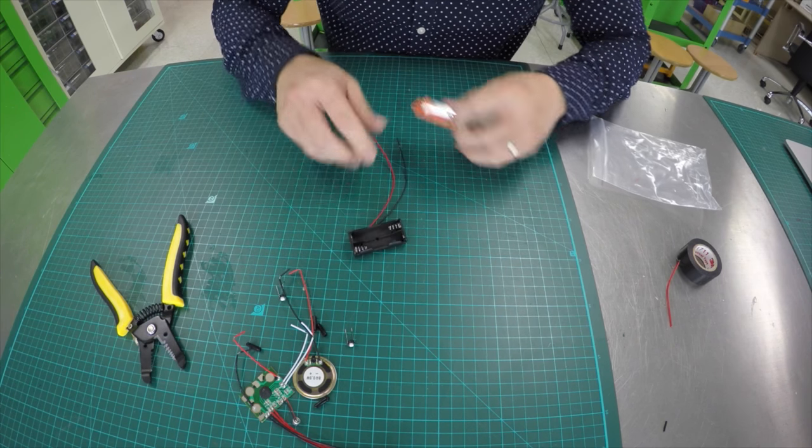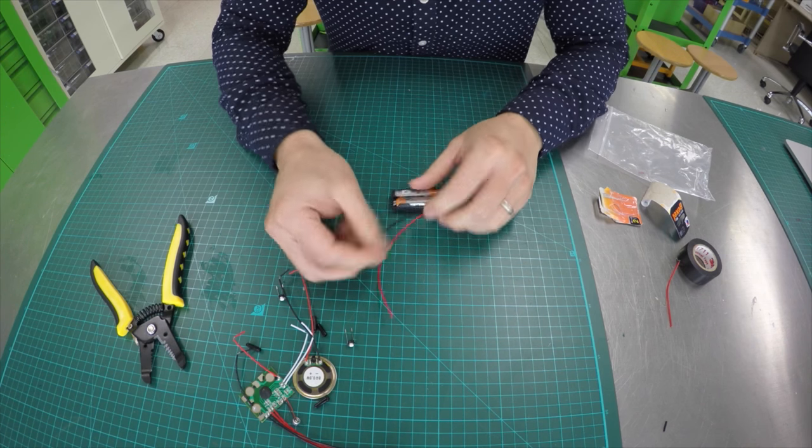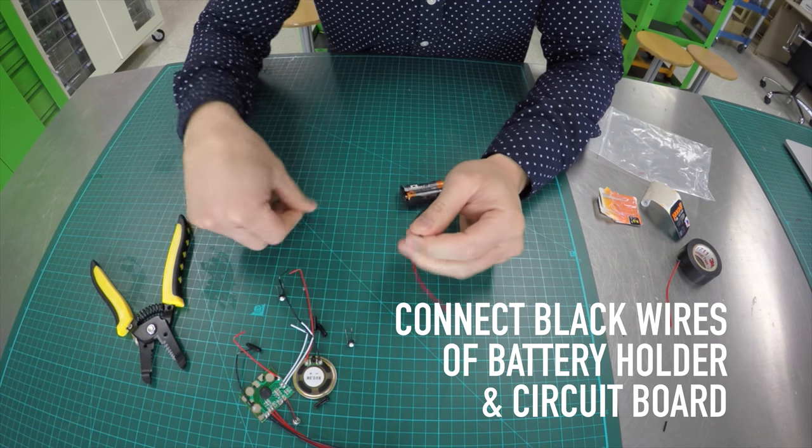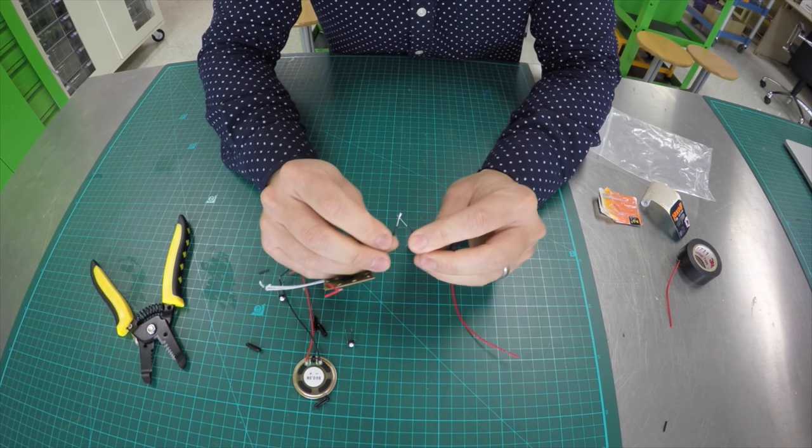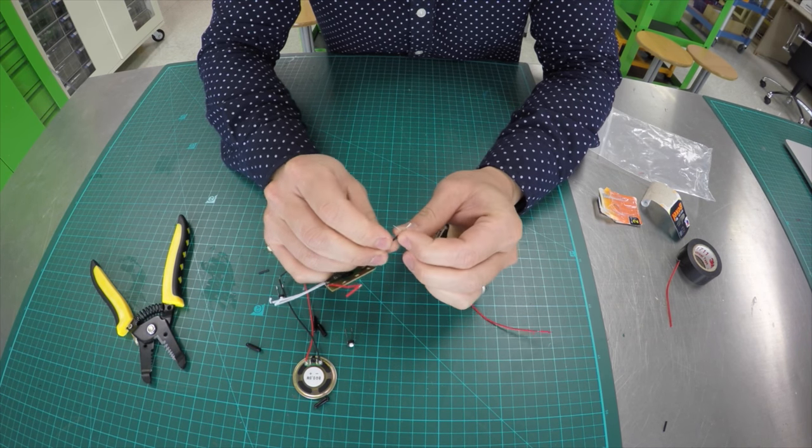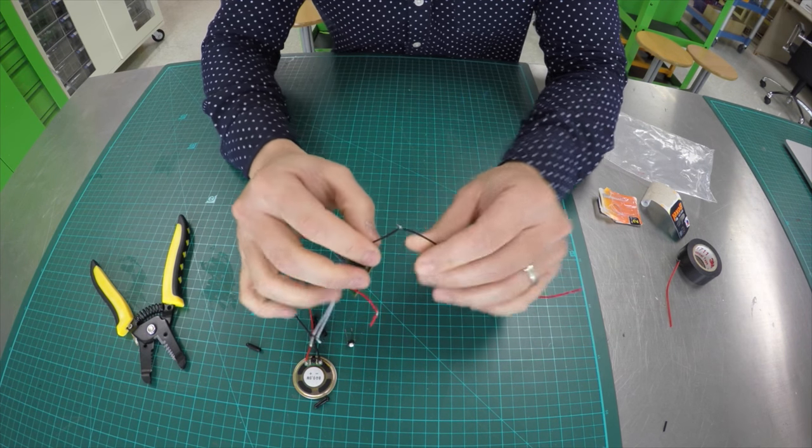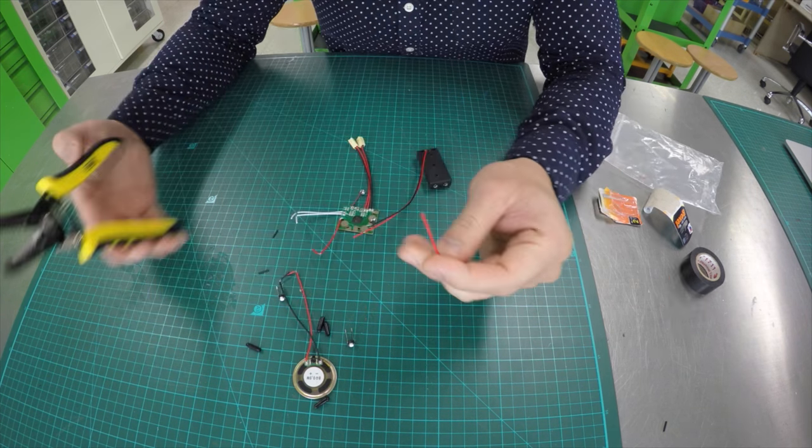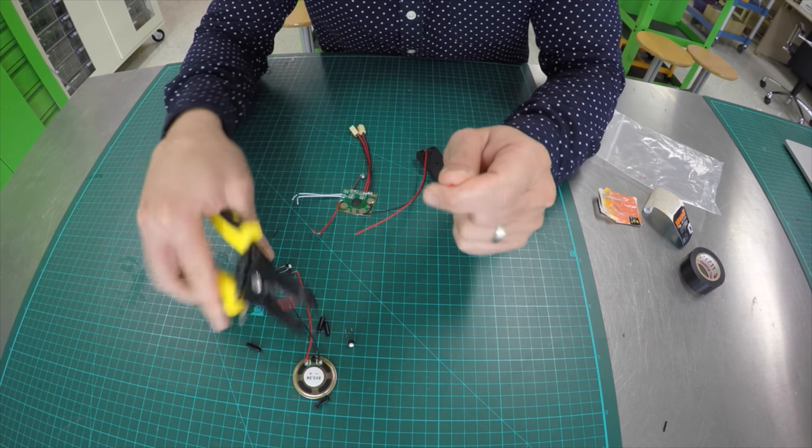First, let's start with the power source, the component that supplies electric energy to the electrical load. We will connect the black wire of the battery holder to the black wire of the circuit board. I like to create a cross between the wires and then twist them together. If the aluminum wires are not visible, you can use the wire strippers to strip the wire.